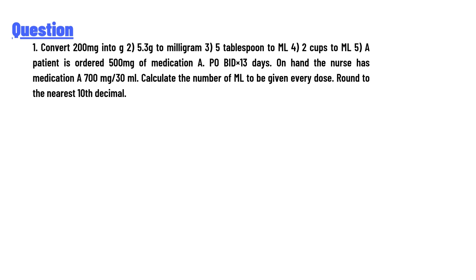5) A patient is ordered 500 milligram of medication, PO BID times 13 days. On hand, the nurse has medication 700 mg over 30 ml. Calculate the number of ml to be given every dose. Round to the nearest tenth decimal.